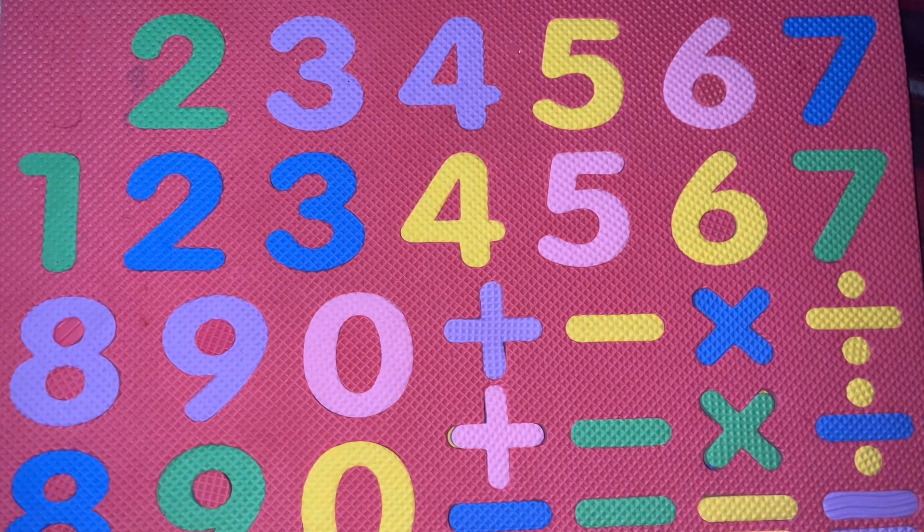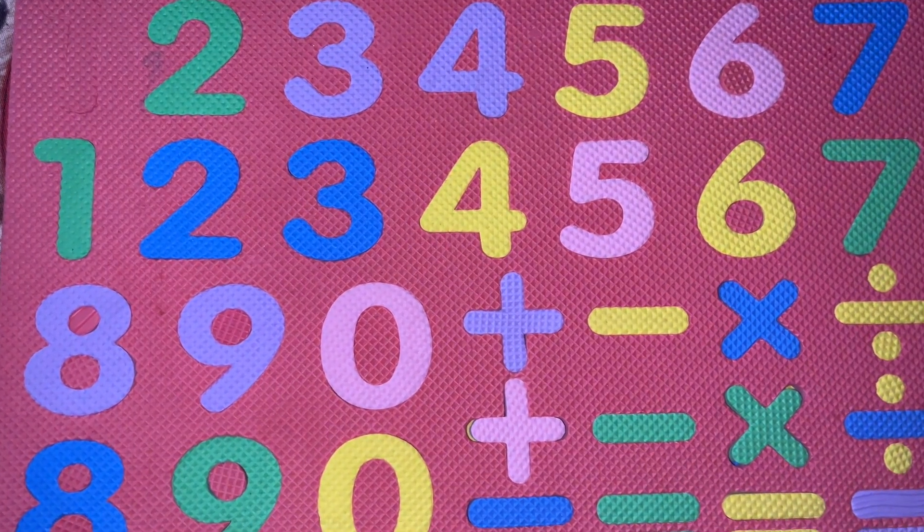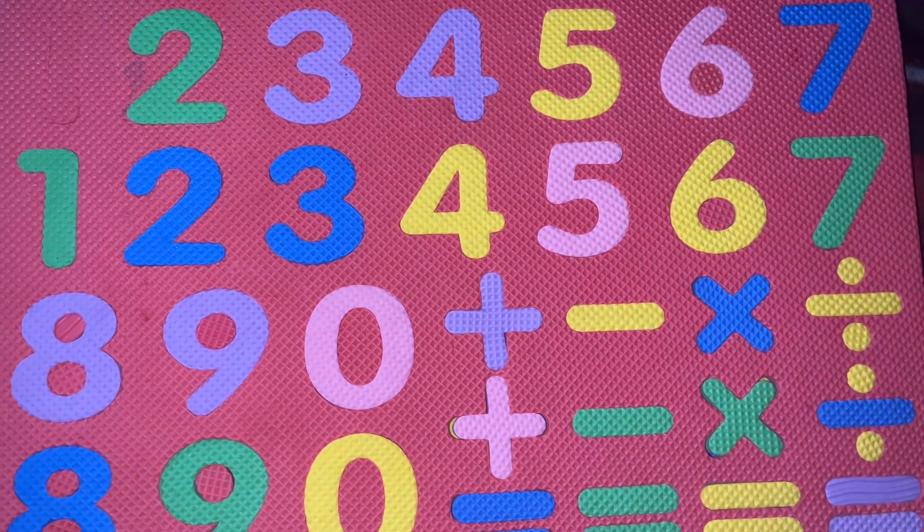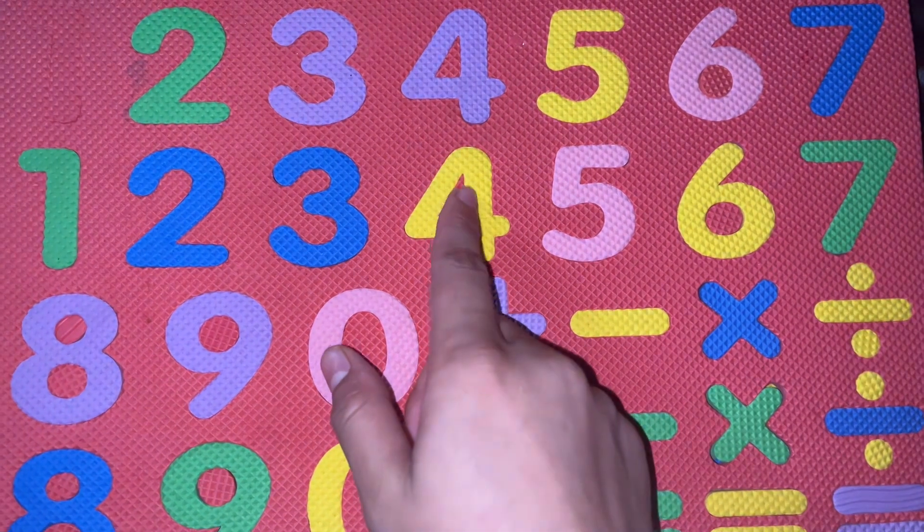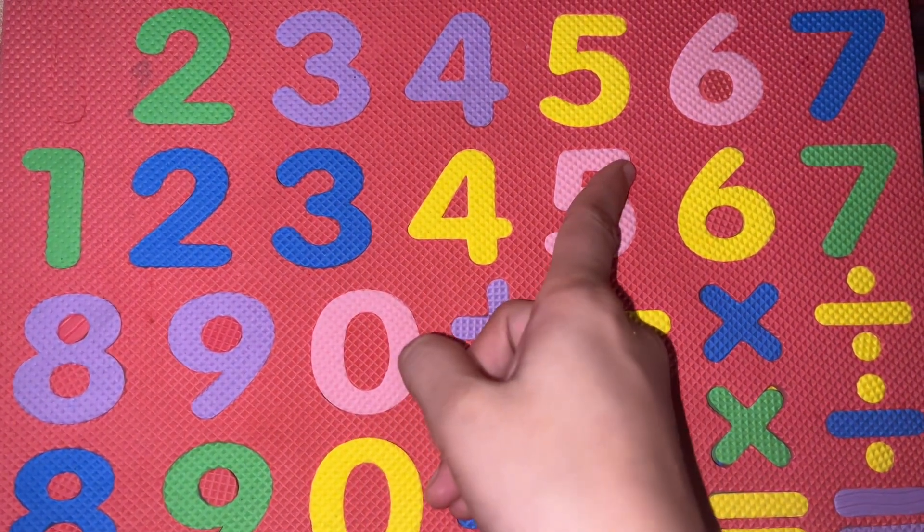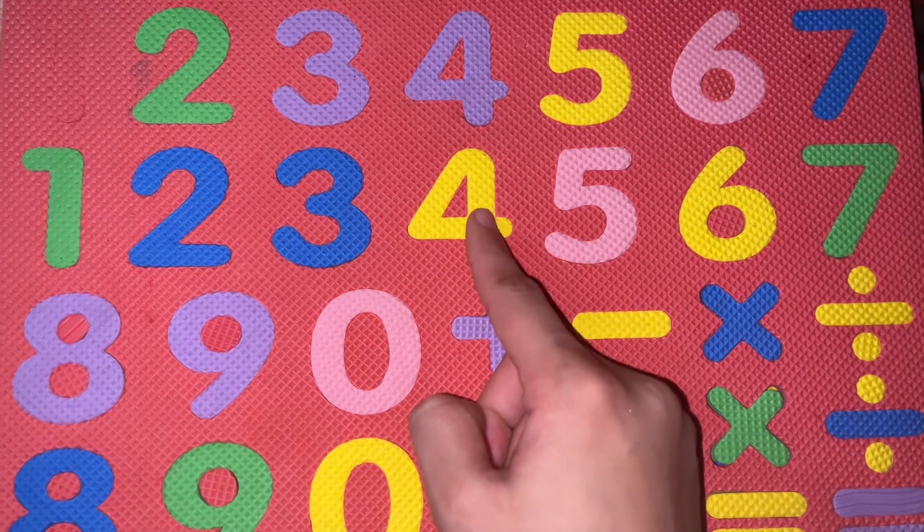So the first question is what comes between 3 and 5? What comes between 3 and 5? So 4 comes between 3 and 5. Spelling of 4 is F-O-U-R-4.